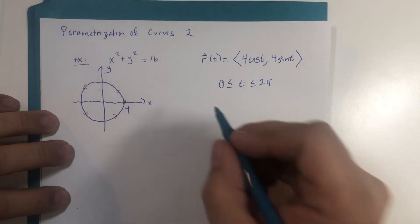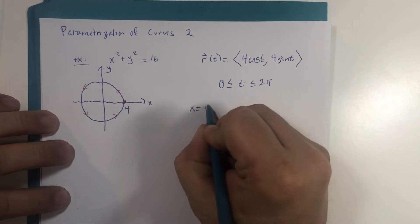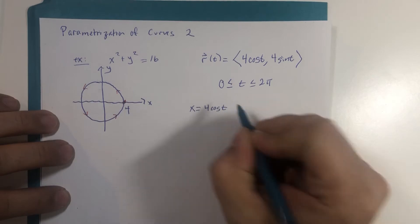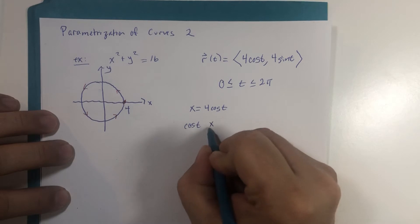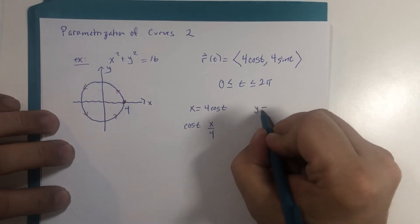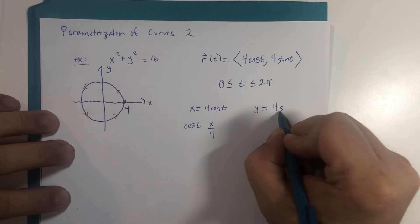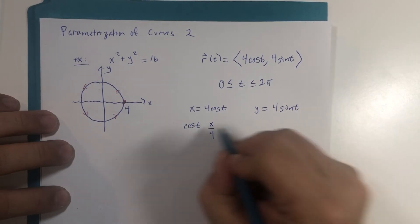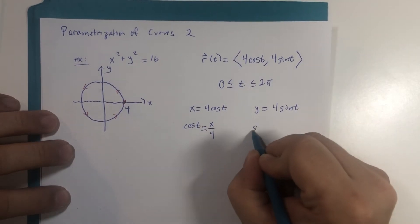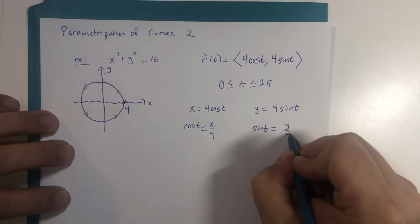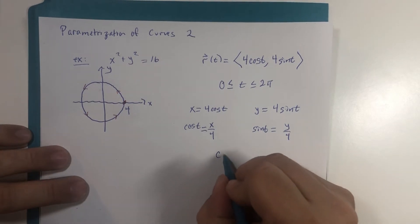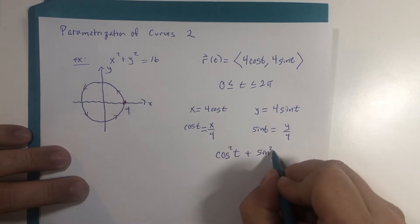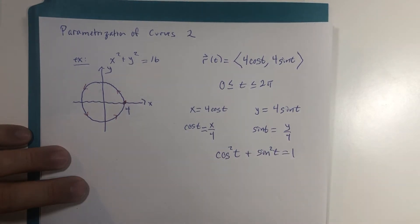Now we were able to algebraically verify this once upon a time. I'm going to do it just this once here. Since our x component is 4 cosine of T then we could say that cosine of T is x divided by 4 and the y component is 4 sine T so therefore sine of T would be y divided by 4 and you know one of our favorite trig identities cosine squared T plus sine squared T is equal to 1.